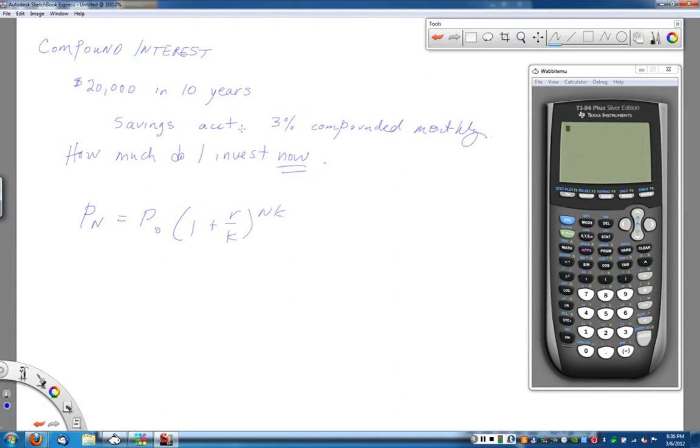Alright, so let's identify what we know. In this case, we know that my value for N, which is the number of years, is 10. I know that K, which is my compounding period, is 12, because I'm compounding monthly. So 12 times per year, I'm having this repeated compounding value. The account is set at 3% annual, or 3% interest, and change that to decimal form, so 0.03.